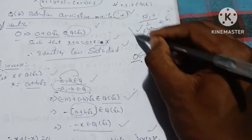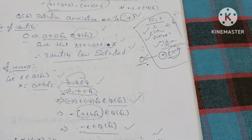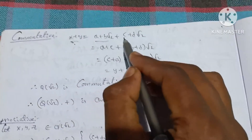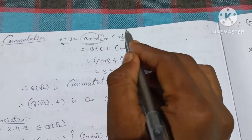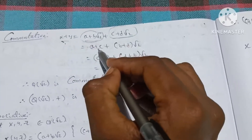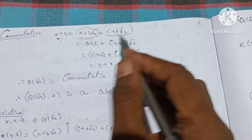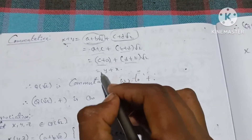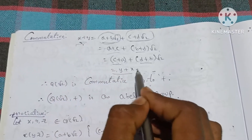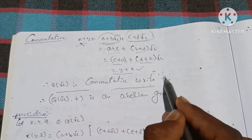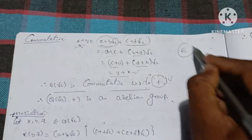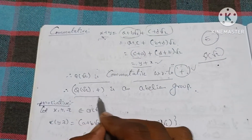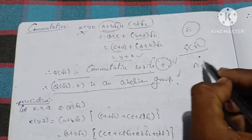Next, the commutative law. Let x plus y equal (a plus b root 2) plus (c plus d root 2), which equals (a plus c) plus (b plus d) root 2. Since a plus c equals c plus a and b plus d equals d plus b, we get y plus x. So x plus y equals y plus x. Q(√2) is commutative with respect to addition, hence Q(√2) is an abelian group.